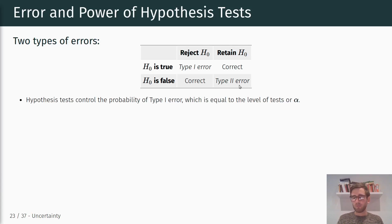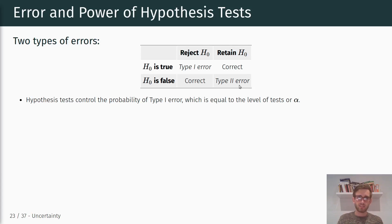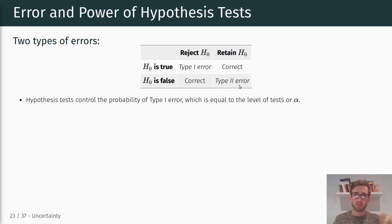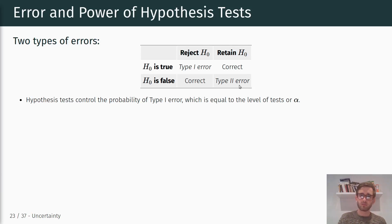The key point is that the significance level alpha controls the probability of a Type I error. That probability of a Type I error is essentially equal to the level of the test, alpha, because it's the probability of observing a test statistic equal to or larger than the value we actually observed under the assumption that the null hypothesis was true. If that probability is small enough — smaller than our alpha level — we reject the null hypothesis.